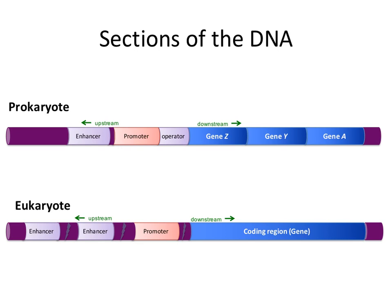Let's start by comparing the DNA sections of a gene in a prokaryote and a eukaryote. Here in blue we have what we call the coding region in both prokaryotes and eukaryotes. One big difference is that in prokaryotes you can have multiple genes in one coding region, while in eukaryotes you only have one gene in a coding region. Another difference is that not all of the DNA in the coding region in eukaryotes will be ultimately translated into proteins, while every part of the coding region in prokaryotes will be translated into protein.